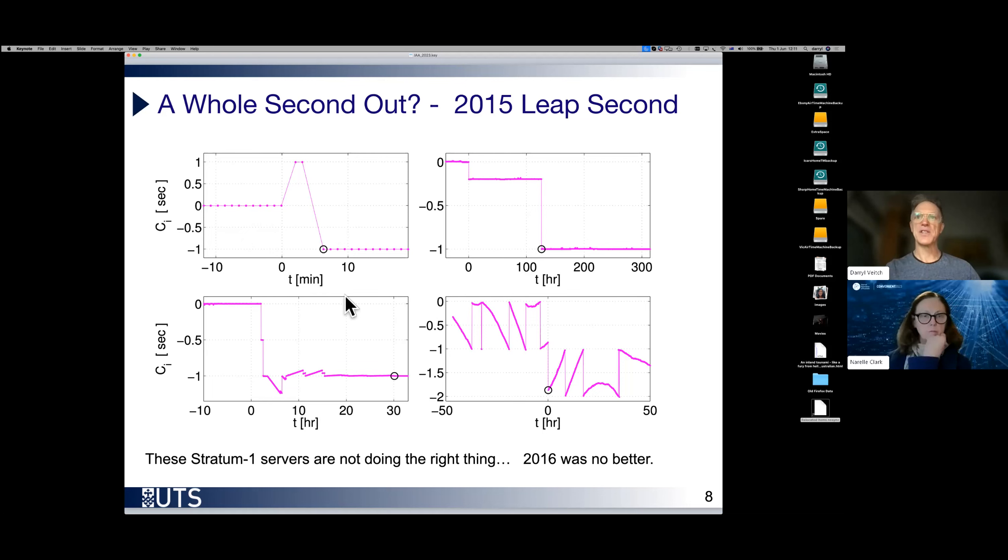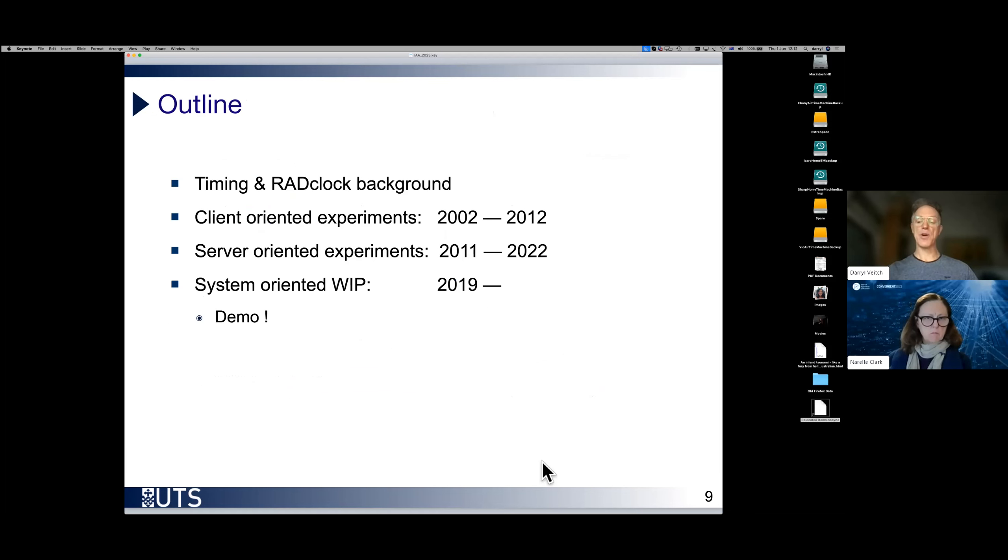What we should see in these plots is a sudden drop from zero down to minus one precisely at the zero here, which is when the leap second was meant to occur at midnight. Instead, we see all of these strange things, including delays and considerable time to finally settle down, or just craziness in some cases. And we did an even larger study in 2016 and we saw the same thing.